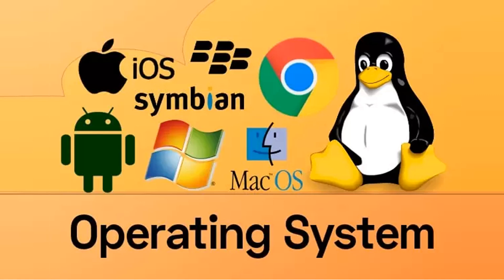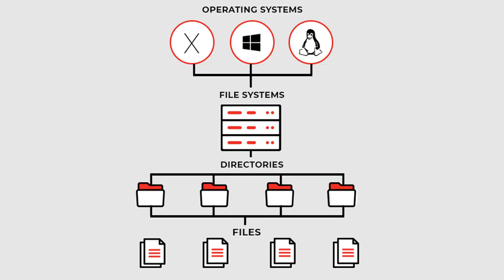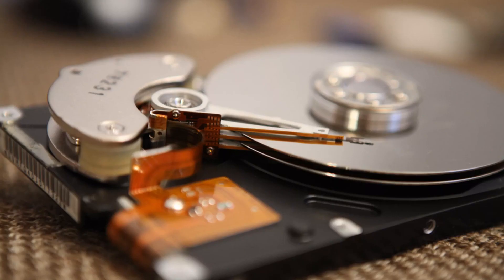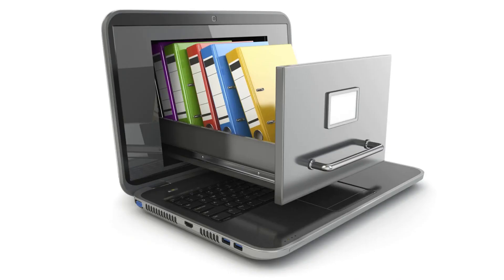File system is an integral part of the operating system. When you install any operating system — Mac, Linux, Windows, etc. — you will get a file system installed on it. File system helps you to create and save files, and these files are stored in the physical hard disk of your computer.